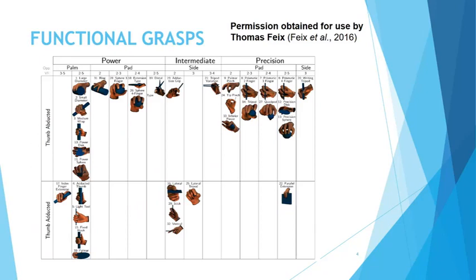What can our hands do? If you observe what your hands are doing in waking hours — let's say 16 hours a day — we will be astonished at how many things we do. For example, using our cell phones requires maximum precision. There is a comprehensive grasp table by Figgs et al. showing that we have power grasps, intermediate, and precision grasps, divided further by whether the thumb is adducted or abducted.